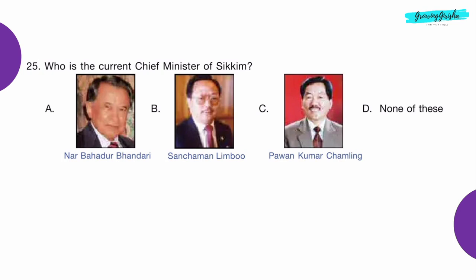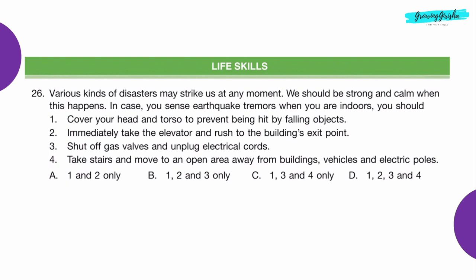Question 25: Who is the current Chief Minister of Sikkim? Option C: In 2017, Pavan Kumar Chamling was the Chief Minister. But the current Chief Minister of Sikkim is Prem Singh Tamang.